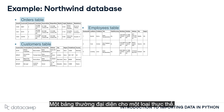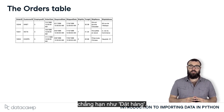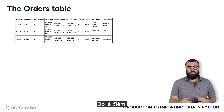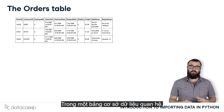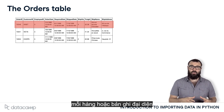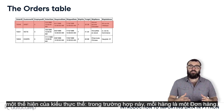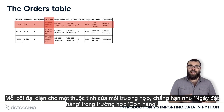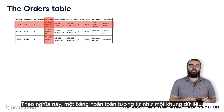What's a table? A table generally represents one entity type, such as Order. Notice that this table looks a great deal like a data frame — and that's the point. In a relational database table, each row or record represents an instance of the entity type. In this case, each row is an order. Each column represents an attribute of each instance, such as the order date. In this sense, a table is entirely analogous to a data frame.